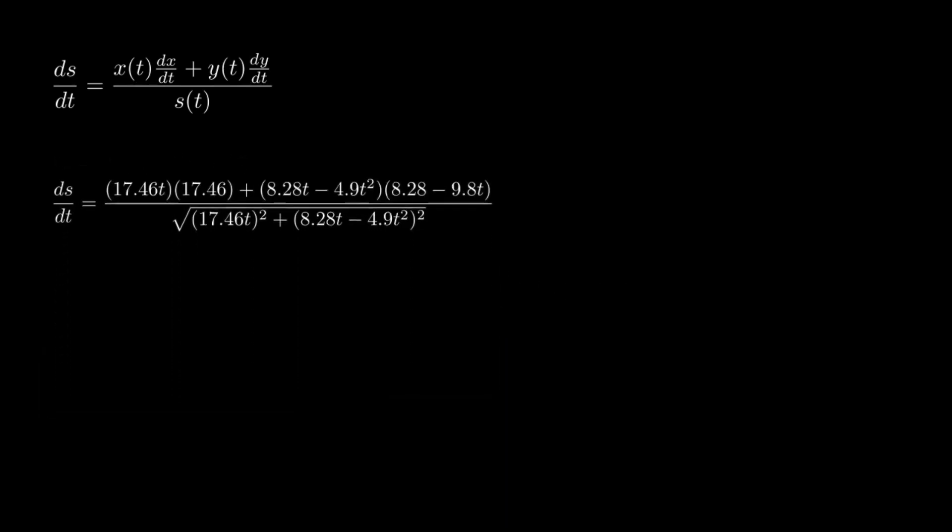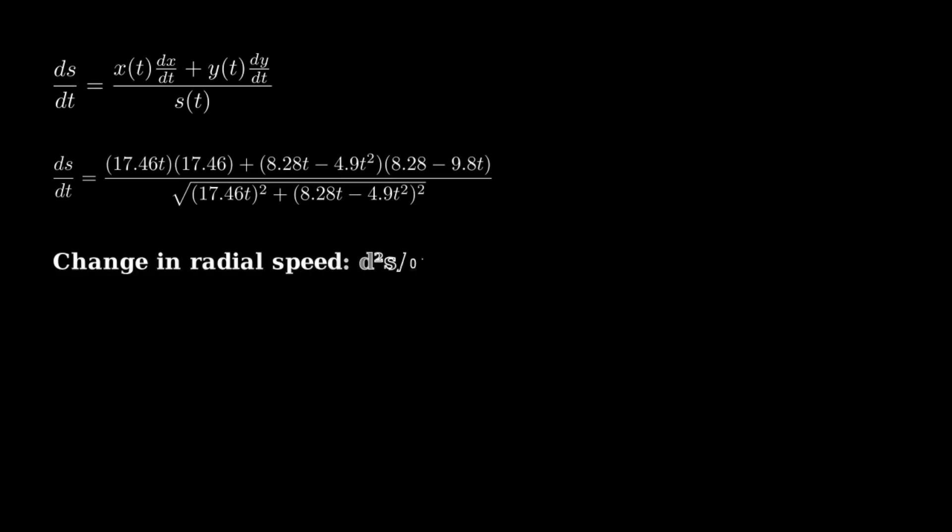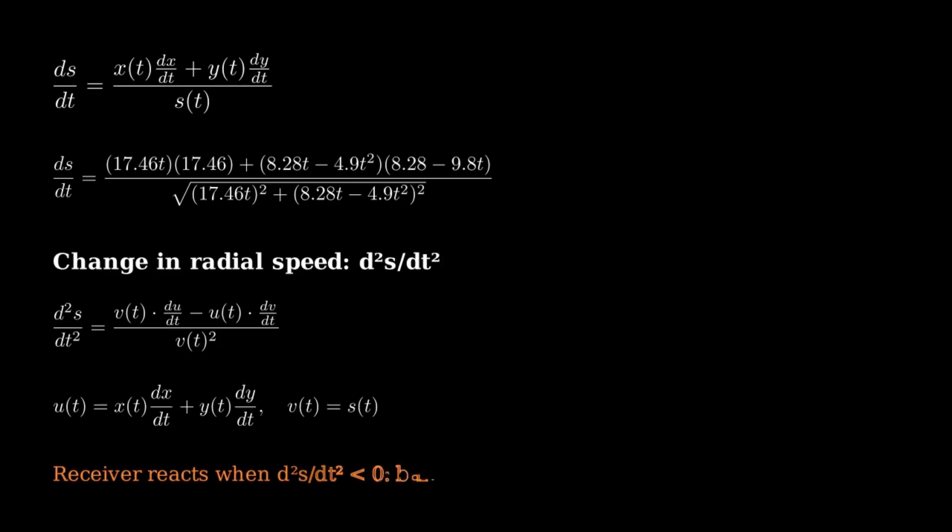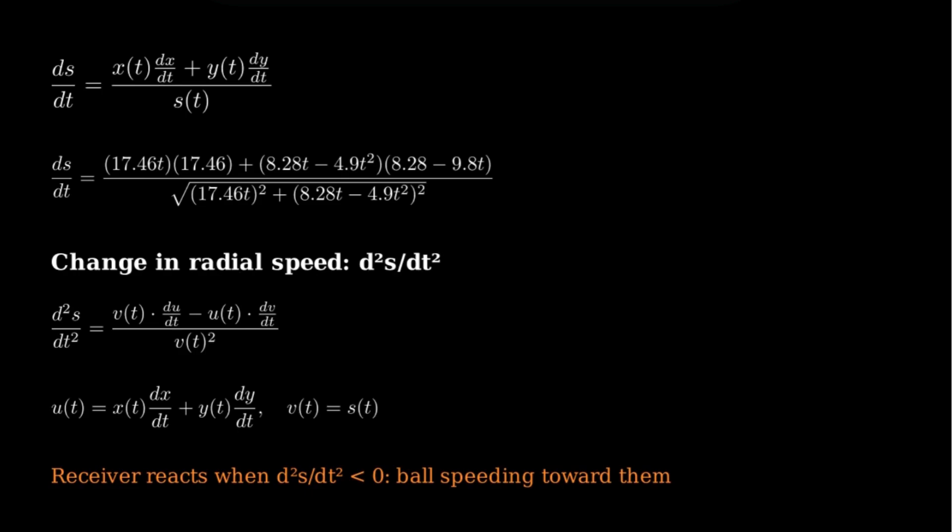But velocity isn't the whole story. What really matters to the receiver is how quickly that velocity is changing. This is where we take the derivative again. When this value becomes negative, it means that the ball is accelerating towards them. That's when their brain tells them to catch the ball. So calculus doesn't just model the motion, it models the moment of human reaction.